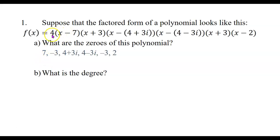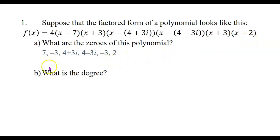The zeros are: the 4 out front is not a zero — it's just a coefficient. We have an x minus 7 factor, so 7 is a zero. We have an x plus 3 factor, so negative 3 is a zero. We have x minus (4 plus 3i), so the complex number 4 plus 3i is a zero. We have a factor x minus (4 minus 3i), so 4 minus 3i is a zero. We have another factor of x plus 3i, so negative 3i shows up again. And we have a factor of x minus 2i, so 2i is a zero. Negative 3i showed up twice, so its multiplicity is 2. We got 5 different zeros, but counting multiplicity, we had 6 zeros of this polynomial. So what is the degree?